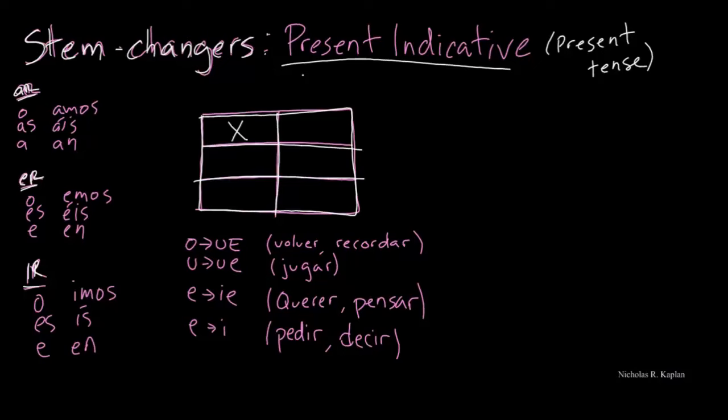Now, some people call these boot verbs, or shoe verbs, or sapato verbs, right? Because they say that this looks like a shoe. My shoes don't look like that, but if that works for you, great. So they have some changes there.